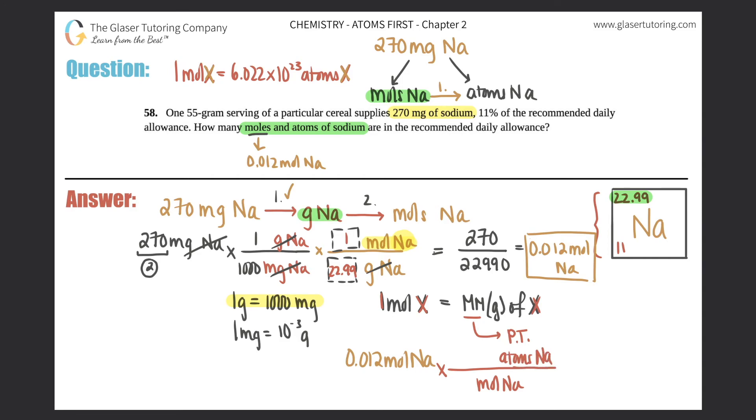And now we're just going to use that conversion factor. It said one mole of anything. So one mole equals Avogadro's number, 6.022 times 10 to the 23rd. The word mole cancels out. And now you just multiply across.